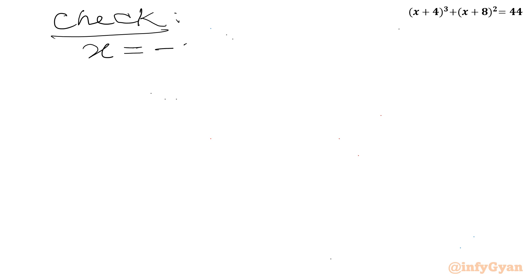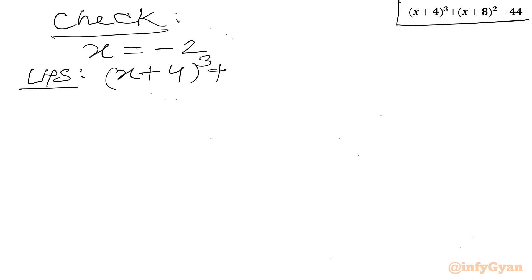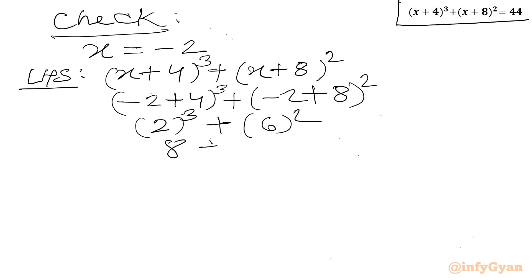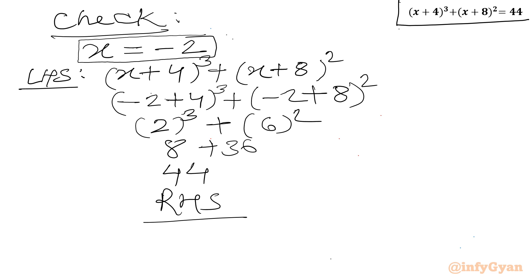Let us verify the real solution. For x = −2, we check LHS: (x + 4)³ + (x + 8)² = (−2 + 4)³ + (−2 + 8)² = 2³ + 6² = 8 + 36 = 44, which equals the RHS. So x = −2 is verified as a true solution.